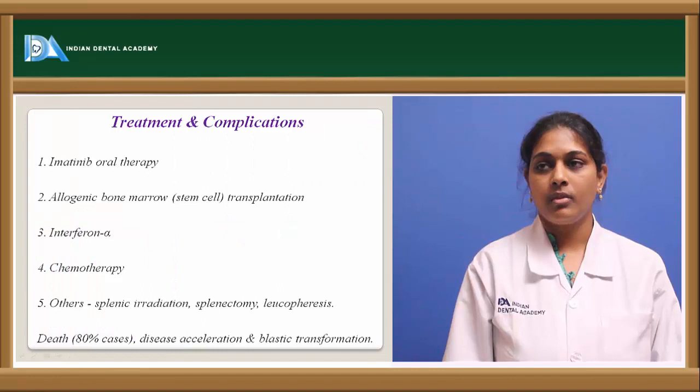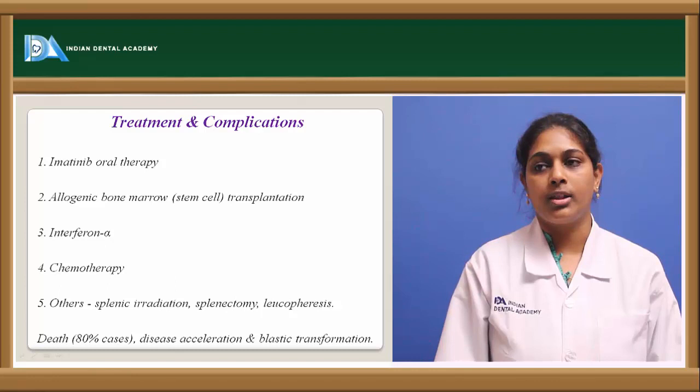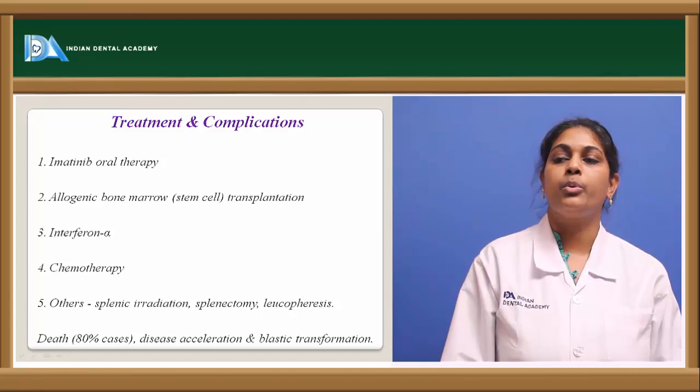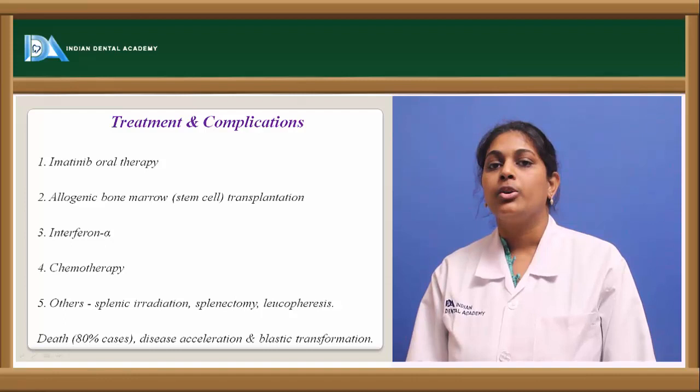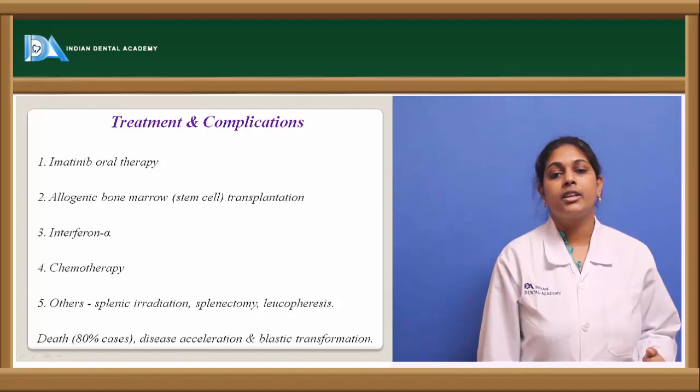Pictures show peripheral blood with May-Grünwald-Giemsa stain showing increased neutrophil count and leukocytosis, along with a hyperlobulated megakaryocyte abnormally increased in size. Treatment includes imatinib oral therapy; for severe bone marrow involvement, allogeneic bone marrow transplantation is suggested. Interferon-alpha, chemotherapy, splenic radiation, splenectomy, and leukopheresis can also be given. Approximately 80% of cases end in death when disease acceleration and blastic transformation occur.